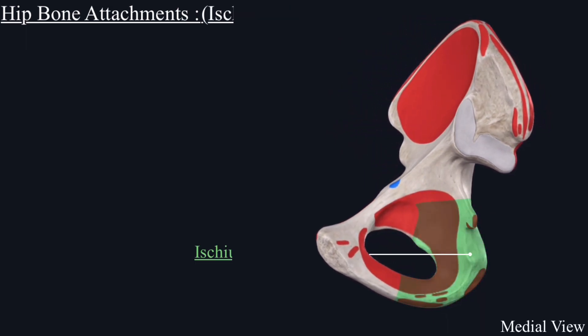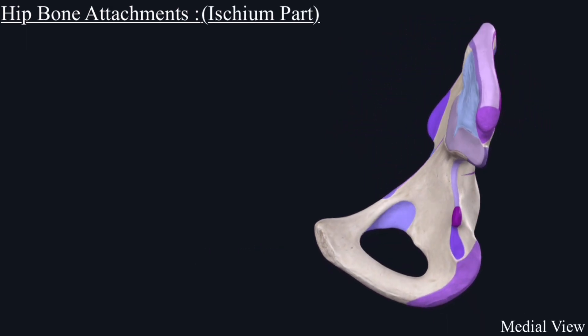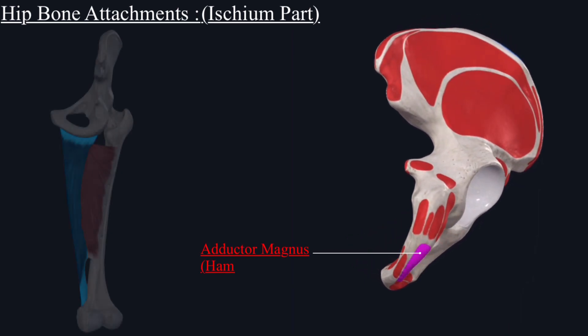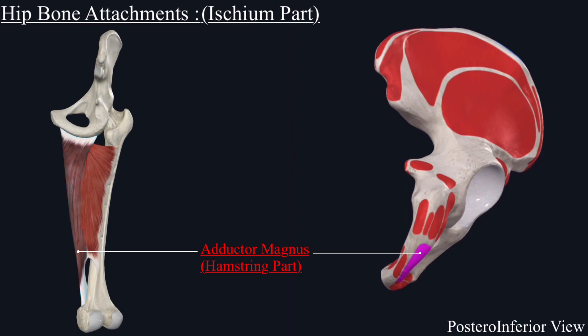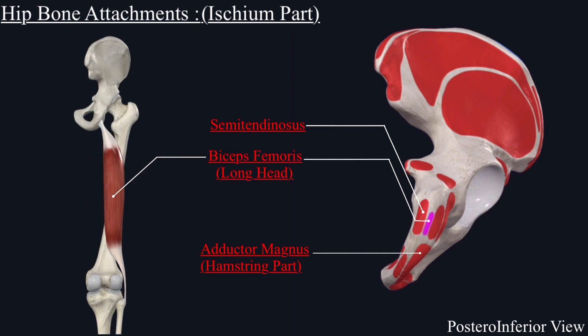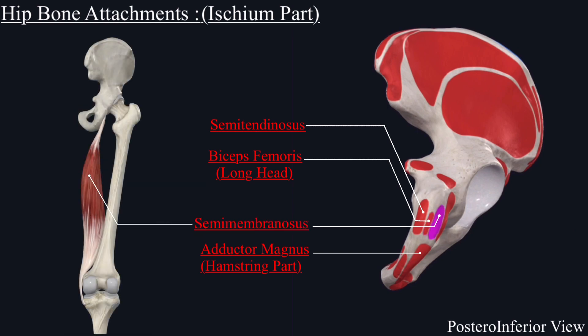Next is the ischium part. An important feature is the ischial tuberosity, which gives origin to the hamstring muscles — that is the hamstring part of the adductor magnus muscle, the semitendinosus muscle, the long head of the biceps femoris muscle, and the semimembranosus muscle.